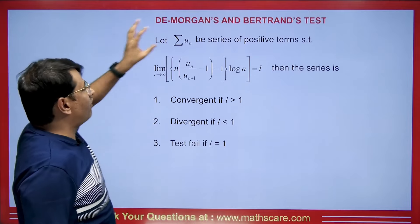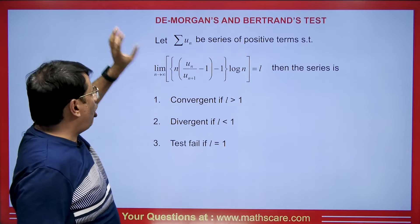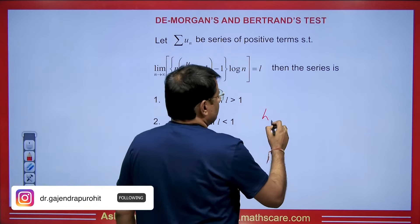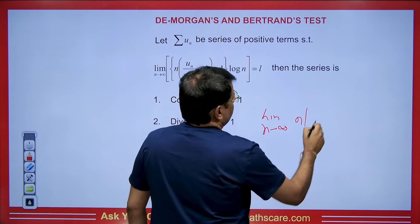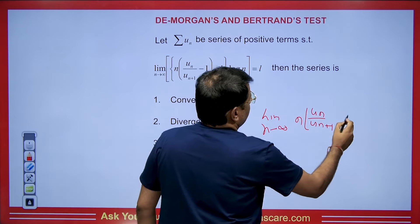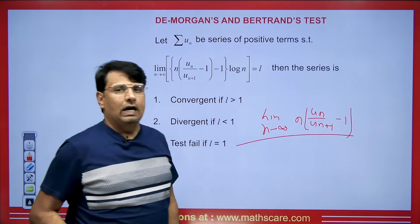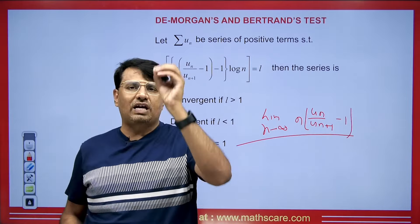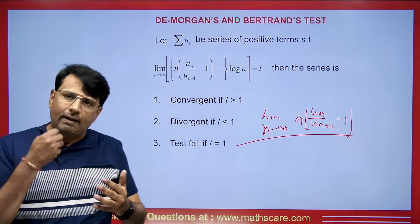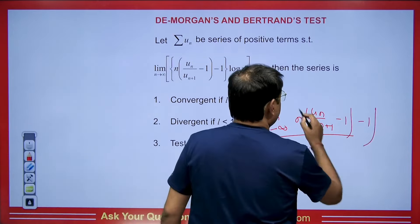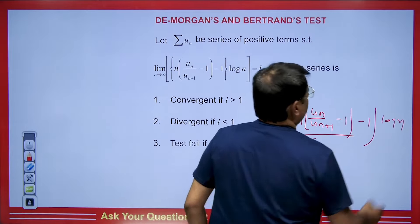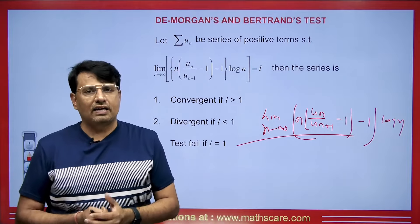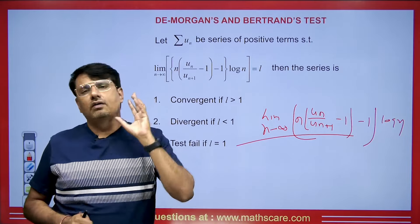DeMorgan's test applies to an infinite series with positive terms. The Rabbe test is: limit as n tends to infinity of n(U_n / U_{n+1} − 1). If this value is greater than 1, the series is convergent; if less than 1, divergent; if equal to 1, the test fails. When the Rabbe test fails, we subtract 1 and multiply by log n, then find the limit. If that limit is greater than 1 it is convergent, otherwise divergent, and if equal to 1 the test fails again.